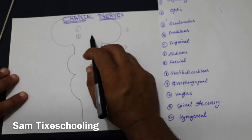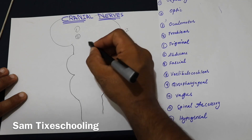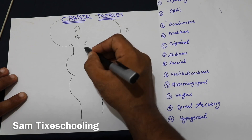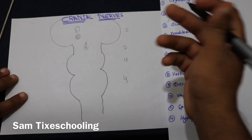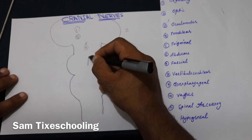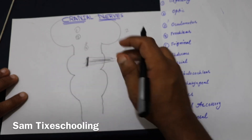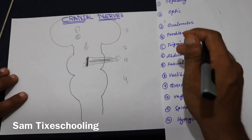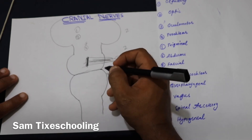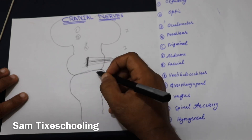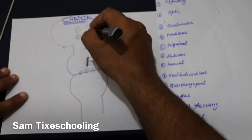The two from your cerebrum are the olfactory and optic nerves. The two from your midbrain are the oculomotor and trochlear nerves. The fifth, sixth, seventh, and eighth nerves arise from your pons — the trigeminal nerve arises from the mid-pons area. Numbers six, seven, and eight are actually found at the junction of pons and medulla, so some books place them in pons and some at the junction.